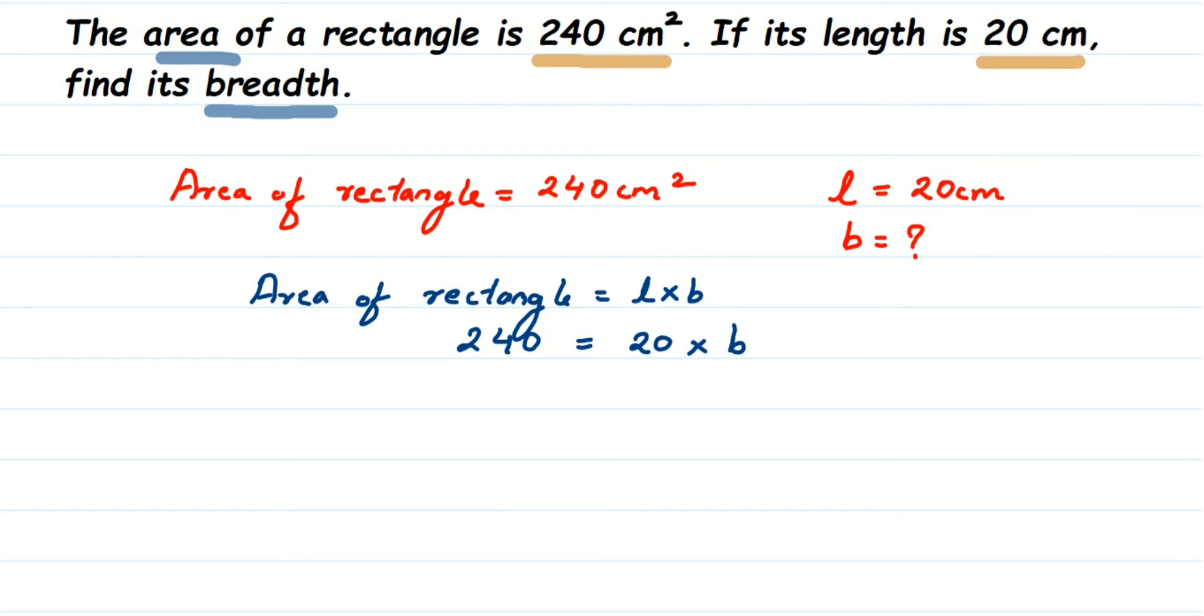Now we want only the B value. So I do not want 20 here. I am going to transpose 20 to the other side. You can see 20 is in the multiplication. When you send this to other side, it goes to division. So this will become 240 divided by 20 is equal to B.